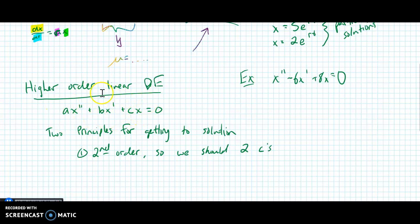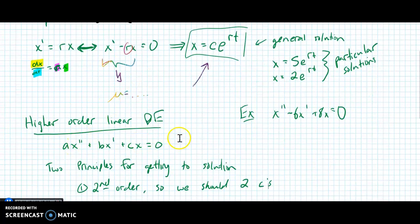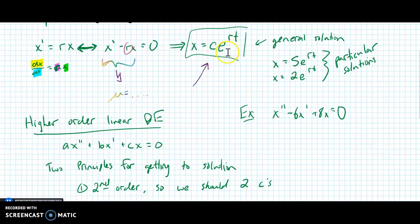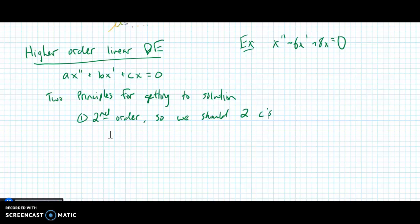So my principles for solving. One: it's second order, so we should have two C's, one for each level of integration that we want to do, because we're going to integrate twice. I guess that actually brings me to another point.